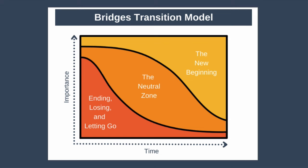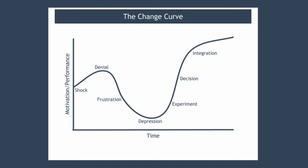Next up, we have the change curve. This helps us understand how people emotionally experience a major disruptive change. It provides a rule of thumb for how people emotionally handle change, and was first used to model how people come to terms with a terminal illness. Knowledge of this curve can help managers improve how they interact with those undergoing change.